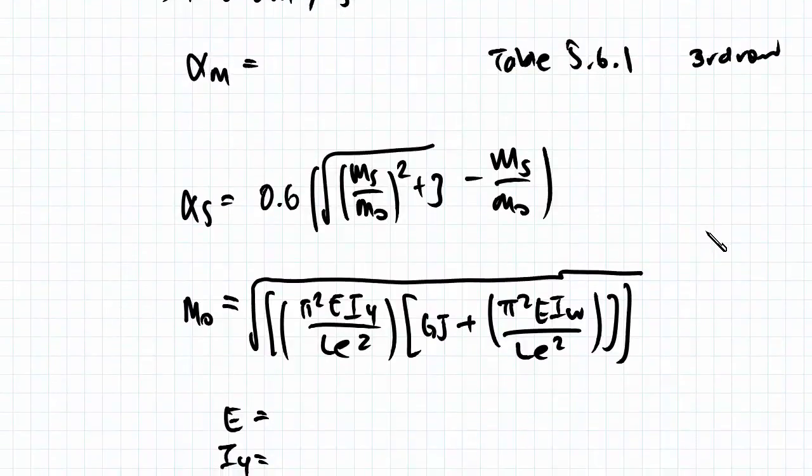So alpha m is 1.35 plus 0.4, I'll write it 2a on L, where a is the distance between the point of action to the mid-span. And because the force is acting directly in the middle or the mid-span, a is equal to 0.